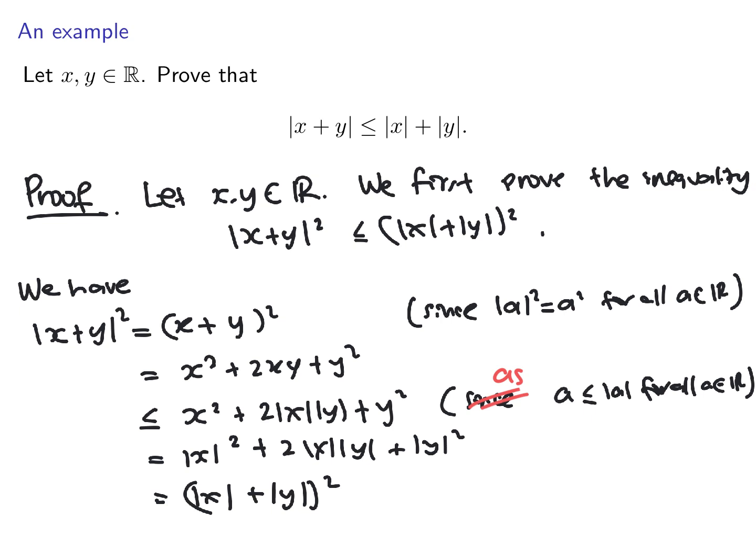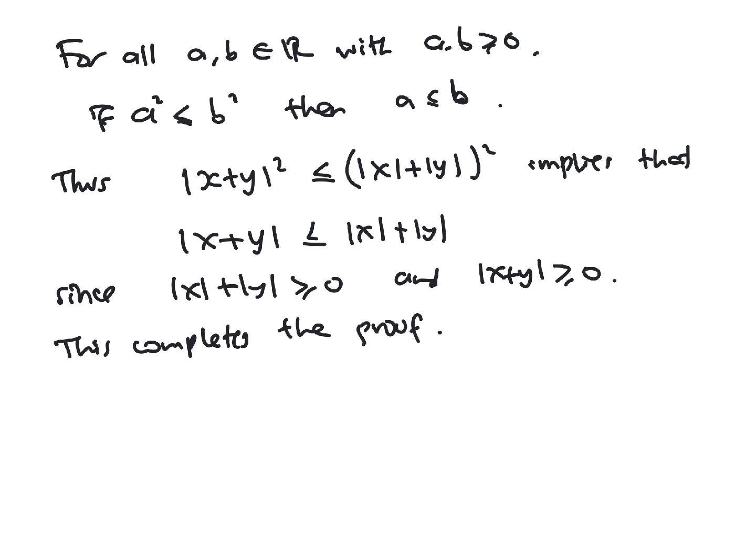So this whole step shows that we have that inequality is proven. And then the next sentence says that for all a and b in R with a and b non-negative we have this implication. Therefore this which is what is proven before implies that that. Essentially applying this result for a equals this and b equals this. And the author even wrote since these guys are non-negative. Again can be improved. We use since too many times. Let's say because.